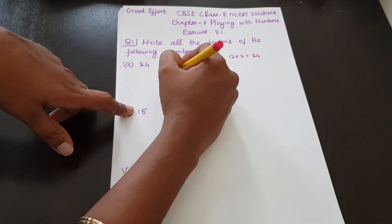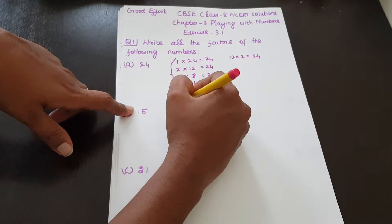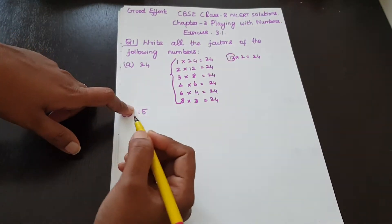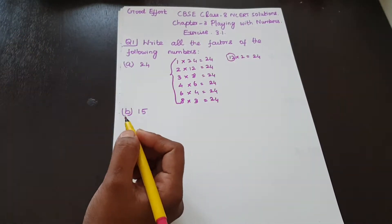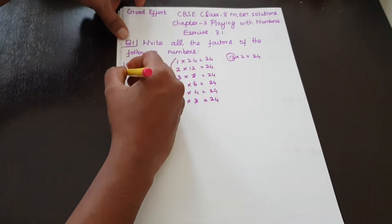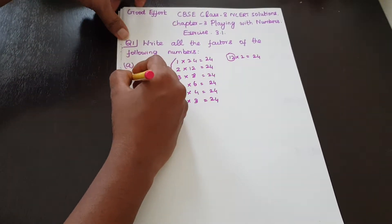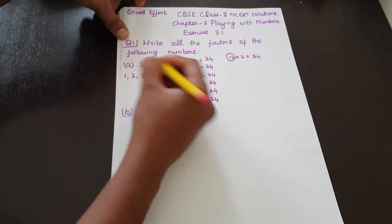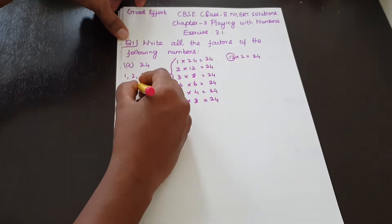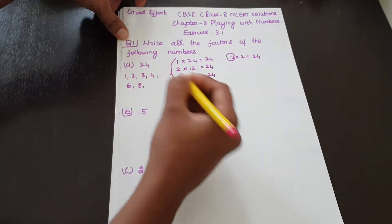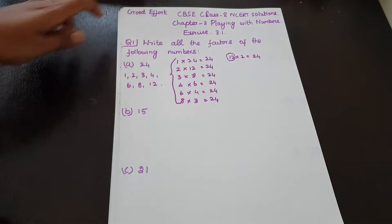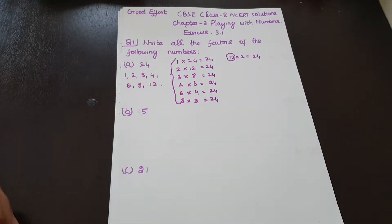So the factors of 24 are: 1, 2, 3, 4, 6, 8, 12, and 24. These are all the factors of 24.